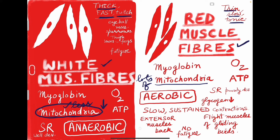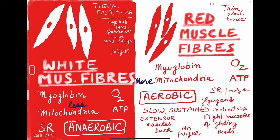Apart from that, there is myoglobin. Myoglobin is like hemoglobin, but because it is in muscles, it has a special name — myoglobin. It is the red pigment which carries oxygen. White muscle fibers have less myoglobin as compared to red muscle fibers, which means oxygen carried will also be less in white muscle fibers.